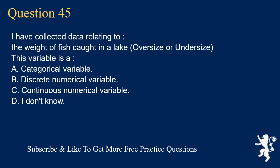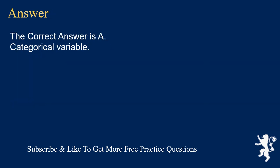Question 45: I have collected data relating to the weight of fish caught in a lake — oversize or undersize. This variable is A. categorical variable, B. discrete numerical variable, C. continuous numerical variable, D. I don't know. The correct answer is A, categorical variable.